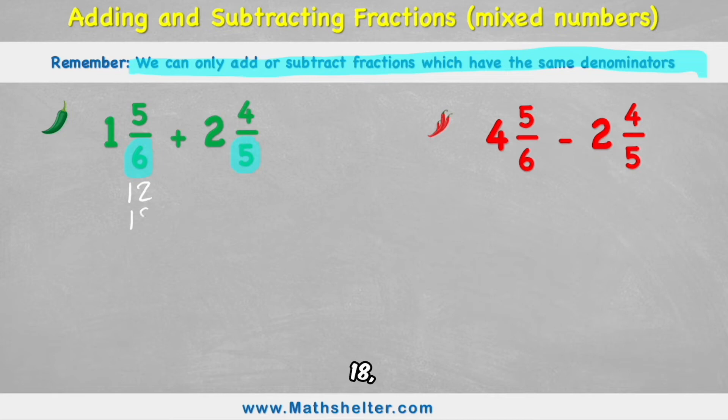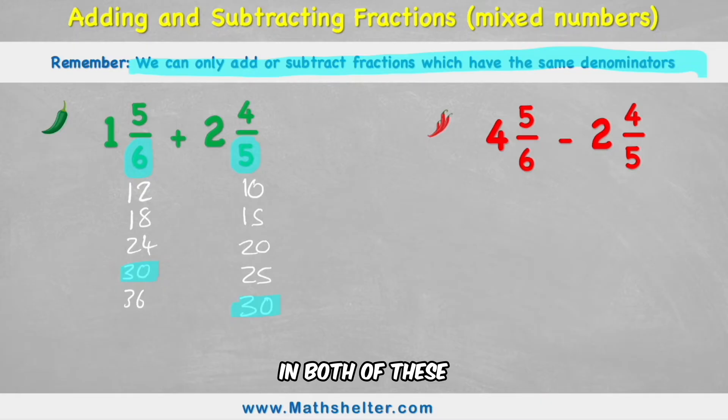So 6, 12, 18, 24, 30, 36. I'll pause there, and then do the next list. 5, 10, 15, 20, 25, 30. Bingo. I thought I'd find that. I have a 30 in both of these lists.